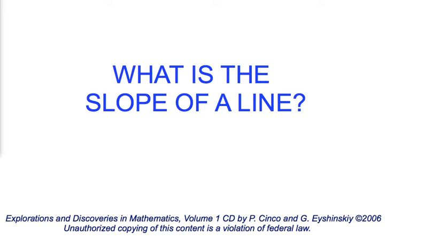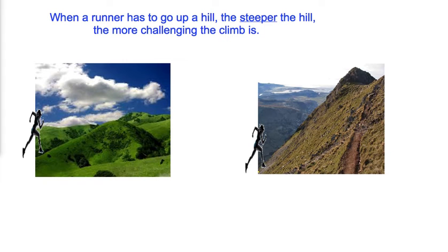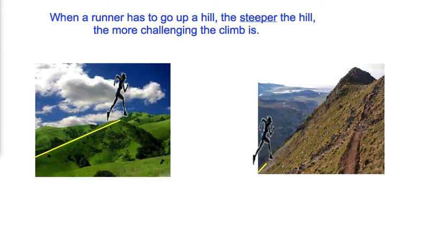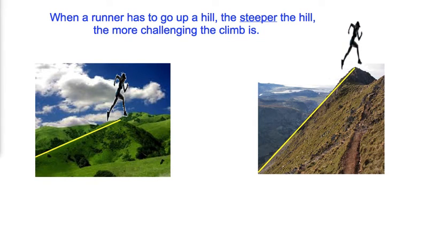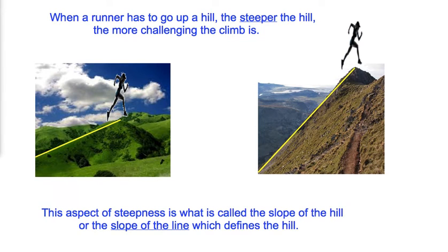Today we will discuss the slope of a line. When a runner has to go up a hill, the steeper the hill, the more challenging the climb is. This aspect of steepness is what is called the slope of the hill or the slope of the line which defines the hill.